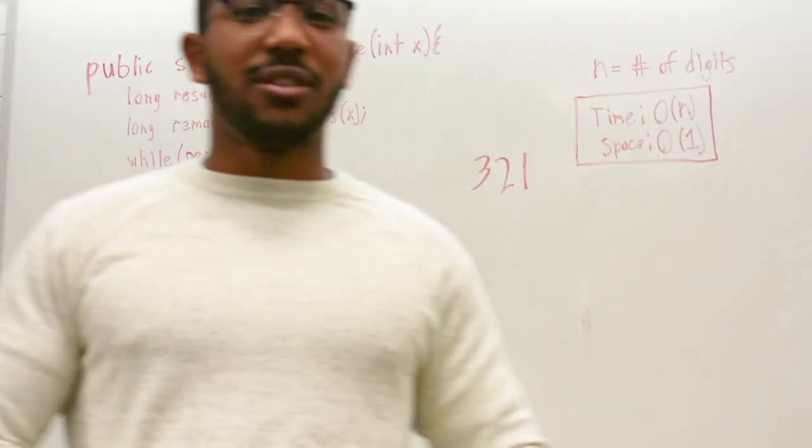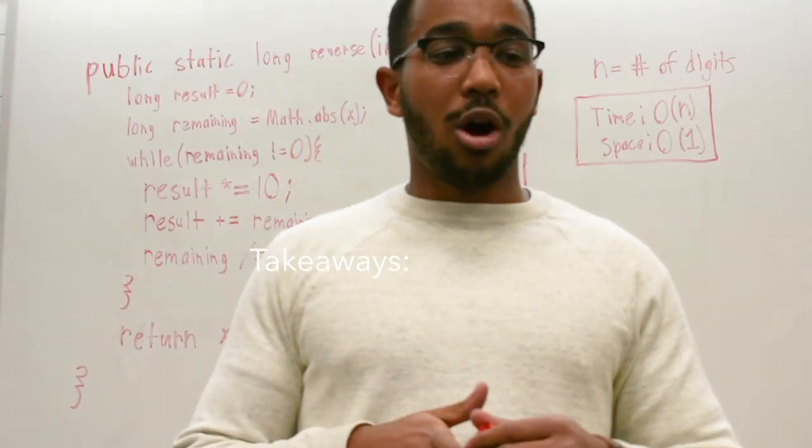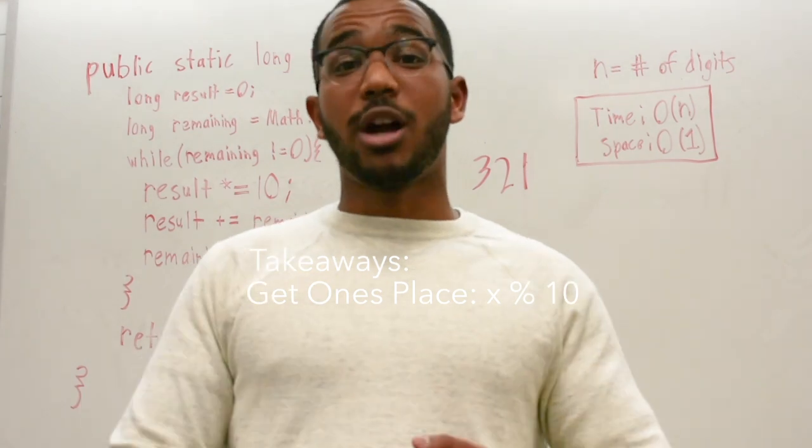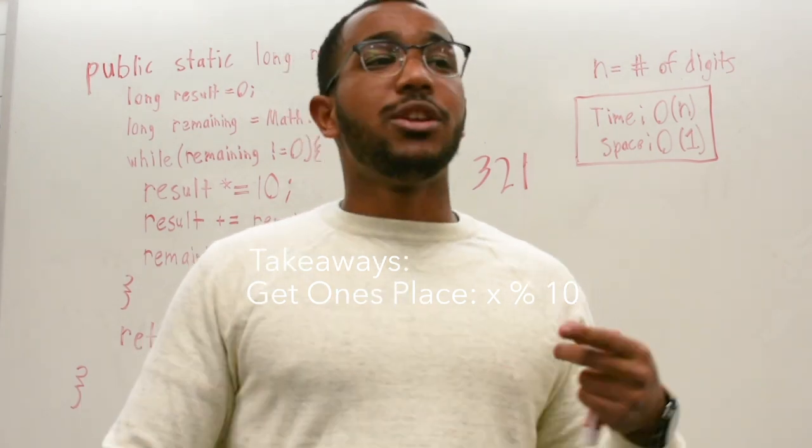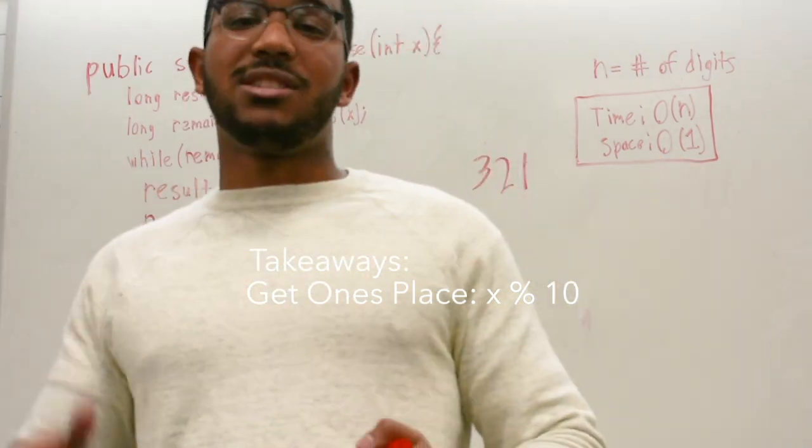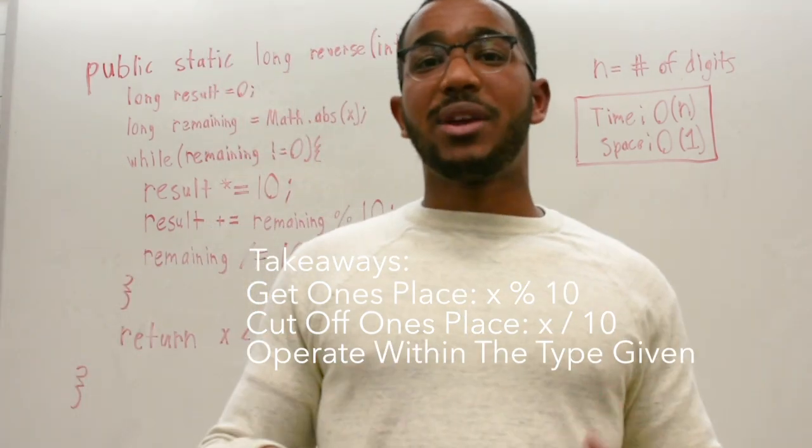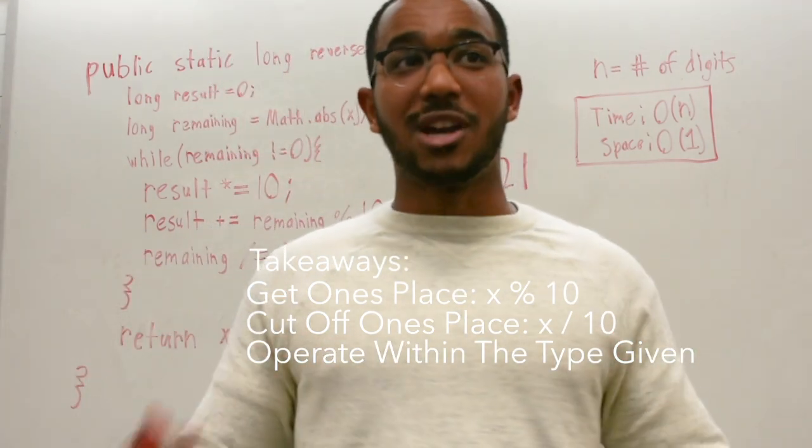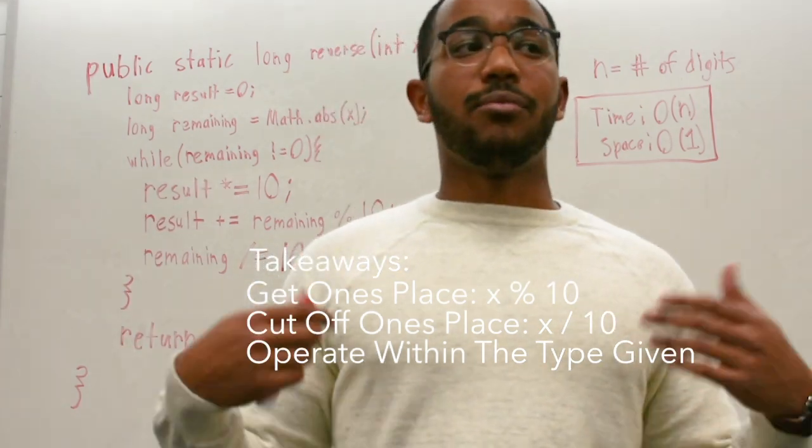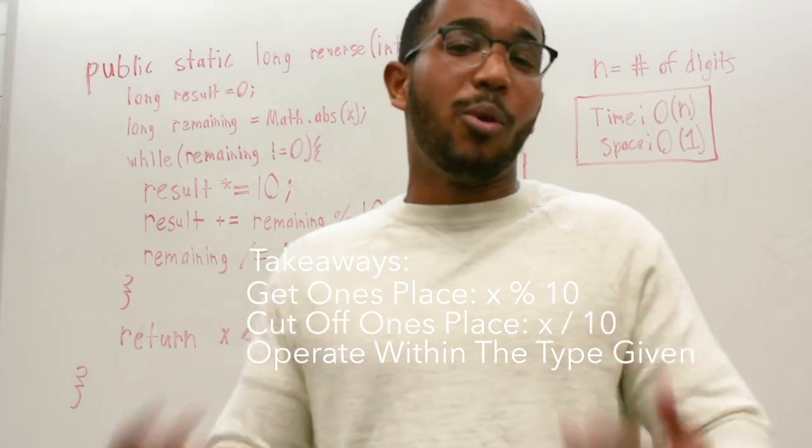So that's basically the gist of this question. I think the biggest takeaways to take from this question are knowing that you can extract the first digit of a number using the mod operator, modulo operator, mod 10. And then you can get all the other digits by doing x divided by 10 to cut off that last digit. And the final takeaway is whenever you get a question in a certain primitive type, it's often going to stay in that type so that the whole point of the question is that you operate on the original type. And that's kind of the point of this question.